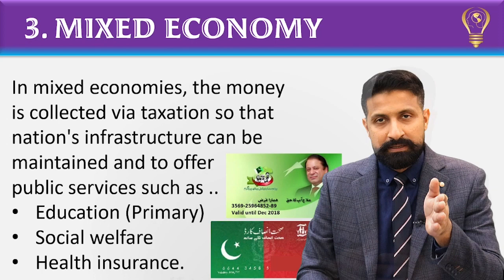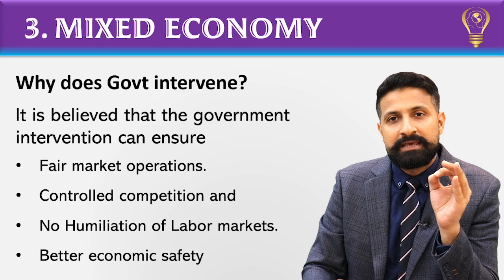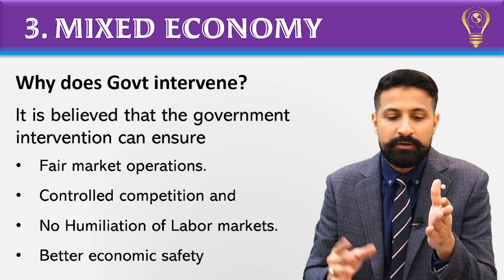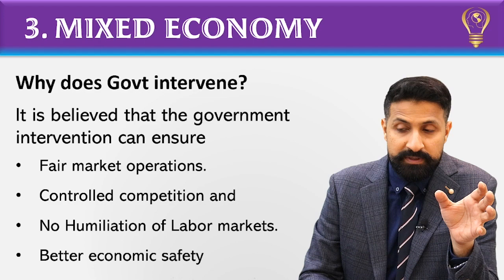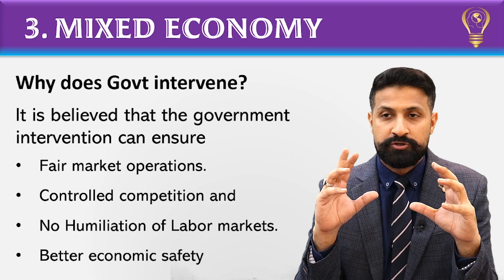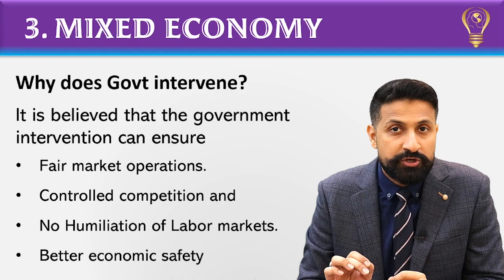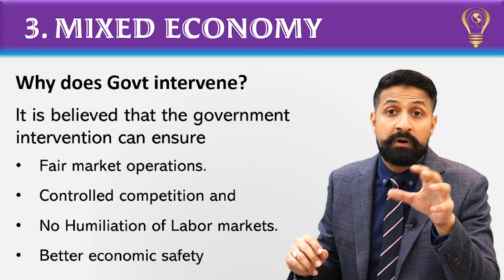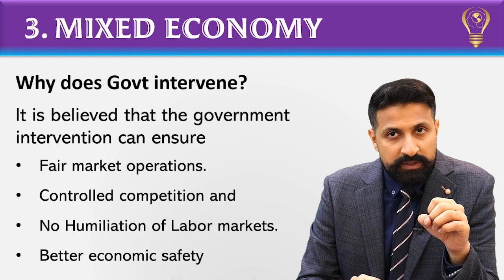Now point by point, why do governments interfere or intervene in the market? First, governments believe that if we allow free market operations — where both supplier side and buyer side manage allocation of resources themselves — the problem will be that efficient allocation of resources will not happen. Market exploitation can occur on the supplier side and on the buyer side. I will make short videos to explain what market exploitation is.